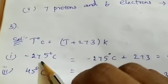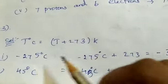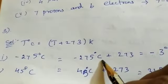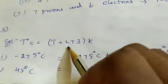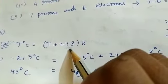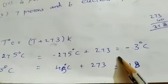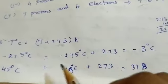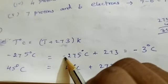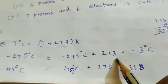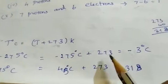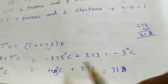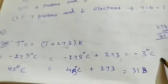First sum: minus 275 degrees Celsius equals minus 275 plus 273 Kelvin. 275 minus 273 equals 2, and the symbol is negative — so the answer is minus 2 Kelvin.